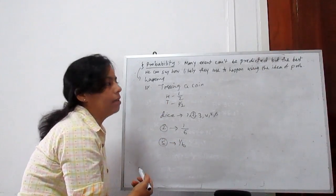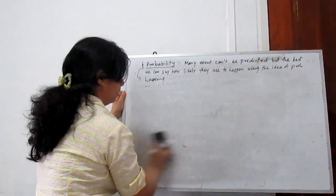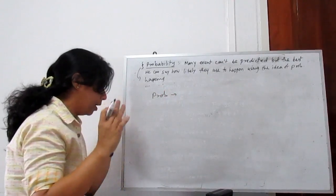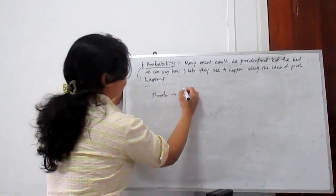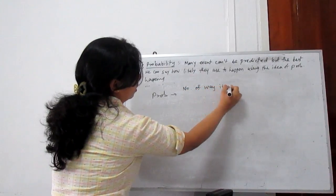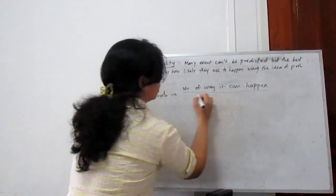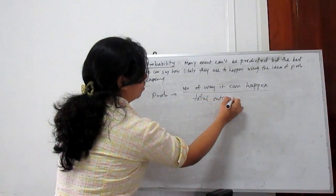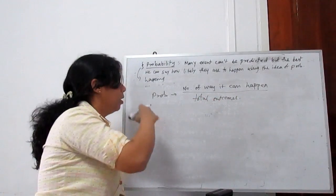From here we can give our probability formula. Probability is given by favorable outcomes — the number of ways it can happen — divided by total outcome, meaning the total number of ways it can happen. That is called probability.